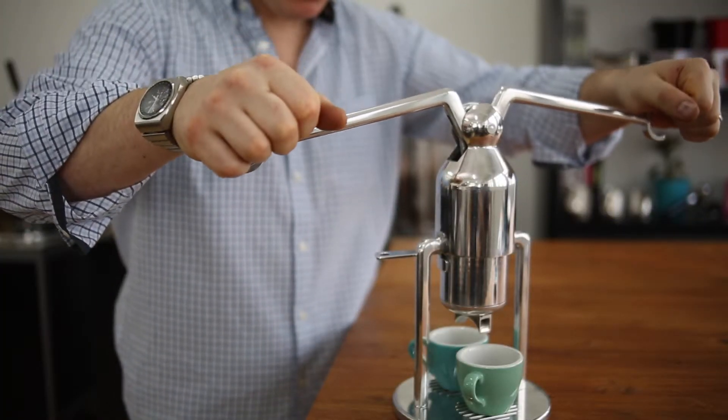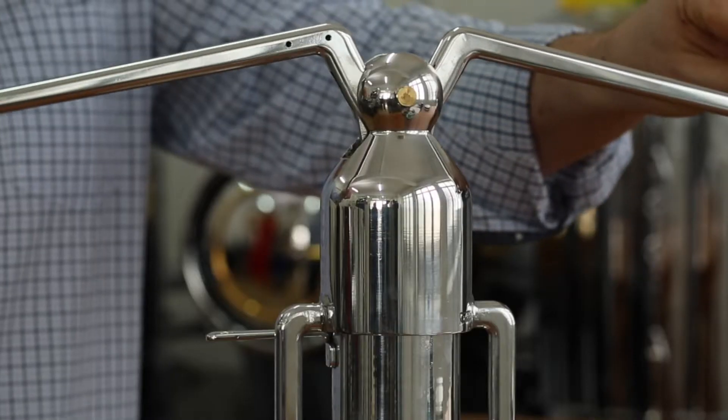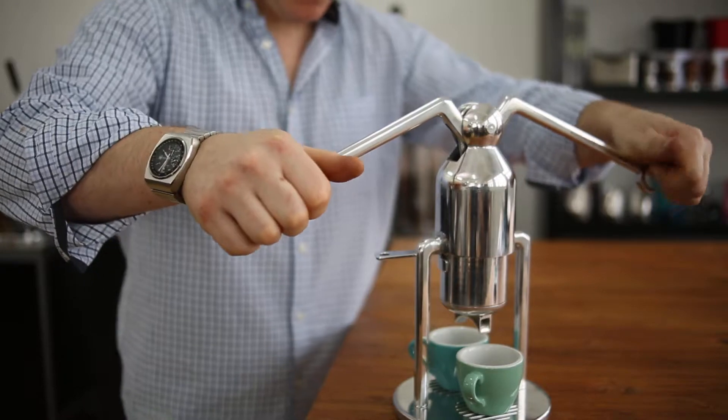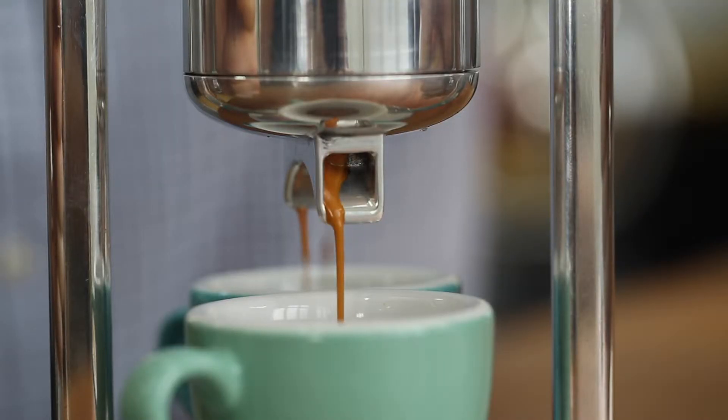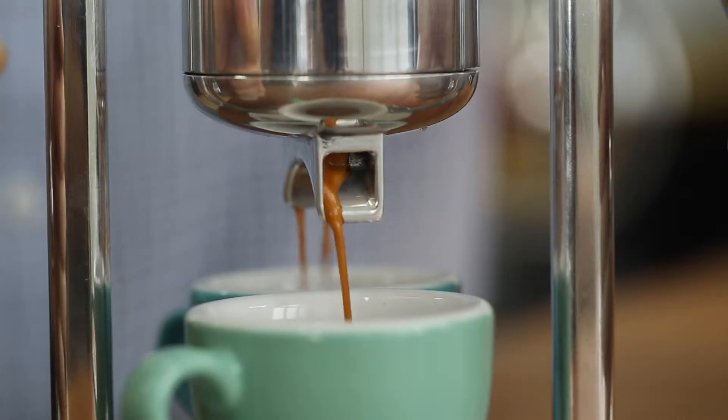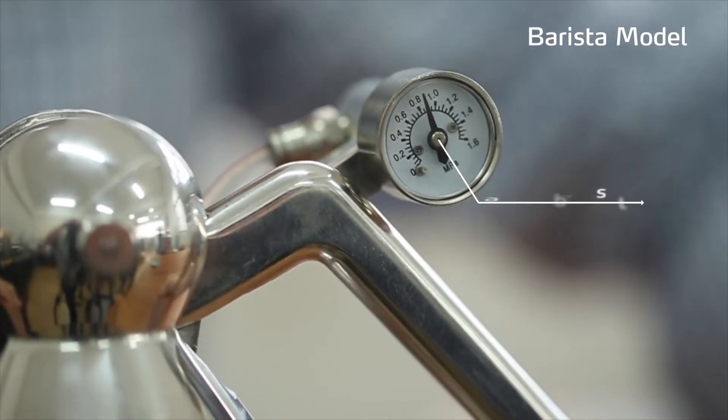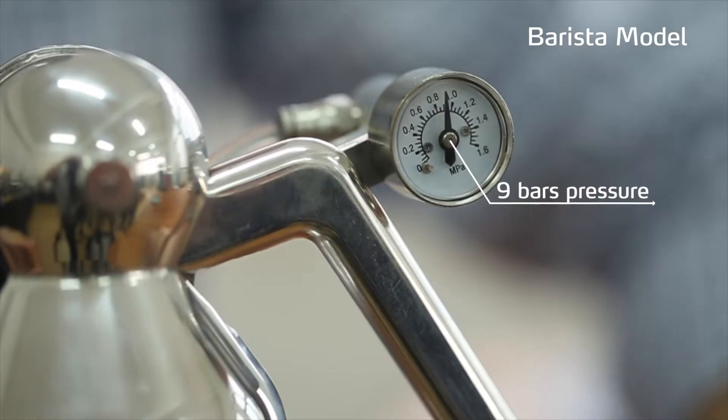Gently let the robot arms fall and pause for a few seconds. This is called pre-infusion and lets the coffee absorb the water. Then firmly press the lever arms down. You may end the shot anytime by releasing pressure on the lever. On the barista model with the pressure gauge, you can easily achieve the desired nine bars of pressure.